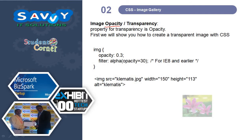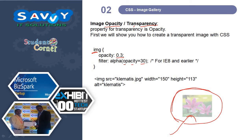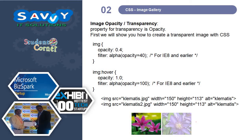The next topic is image opacity and transparency. The property for transparency is opacity. First we will show you how to create a transparent image with CSS. This is what a transparent image looks like — the image is working in the background. The opacity value is set, and filter alpha opacity is used — for example, filter:alpha(opacity=30). When mouse over this image, automatically it will become active and the clear image will be shown. When mouse is not over, the image appears transparent.